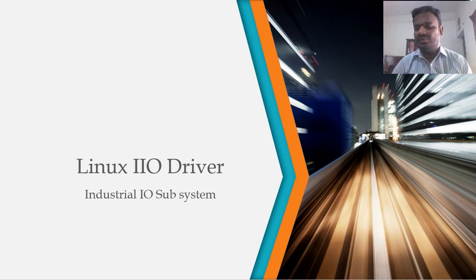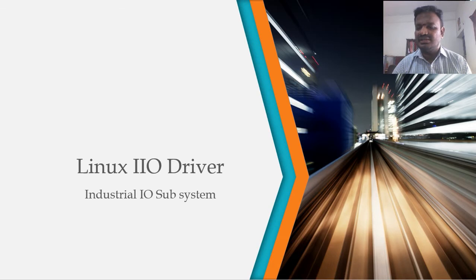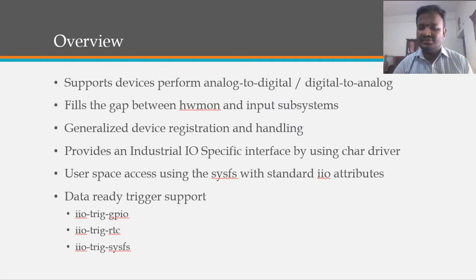Industrial IIO deals with analog signals like 4-20mA, 0-12V, 0-5V, and 0-20mA. Those kinds of analog signals can be an input or output from the system. Because of that, the industrial IIO subsystem majorly works with components like analog-to-digital and digital-to-analog converters.